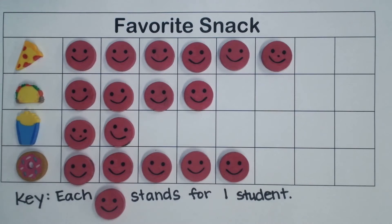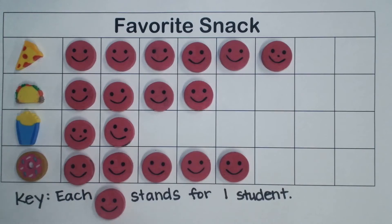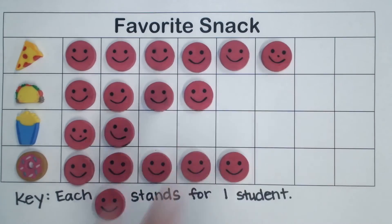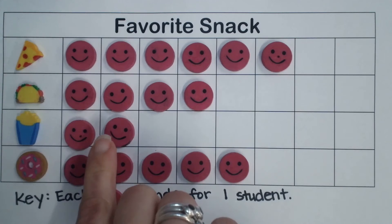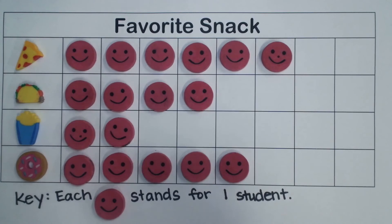You might have a question like how many more students chose pizza than tacos, and because we have this in our pictograph it's easy to see that two more students chose pizza than tacos because of how they line up. You could also do six minus four and know that your answer was two, but when we have a pictograph it's really easy to see quickly. What did the fewest number of students choose as their favorite snack? We can see that is popcorn because there are only two smiley faces in that row. How many more students chose donuts than tacos? Just one.